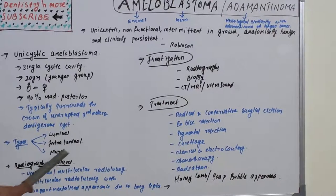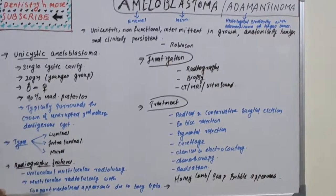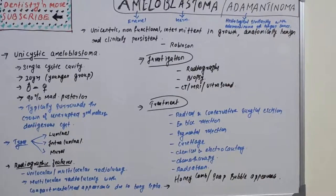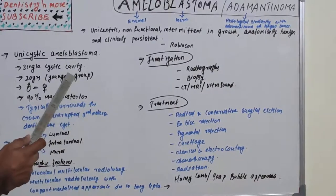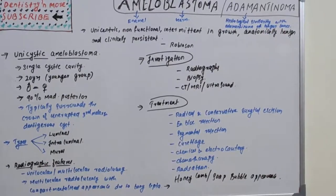Unicystic ameloblastoma has three subtypes: luminal (tumor confined to the luminal surface of the cyst by fibrous connective tissue, partially or totally), intraluminal (tumor nodules project from the cystic lining), and mural (tumor infiltrates the fibrous cystic wall).